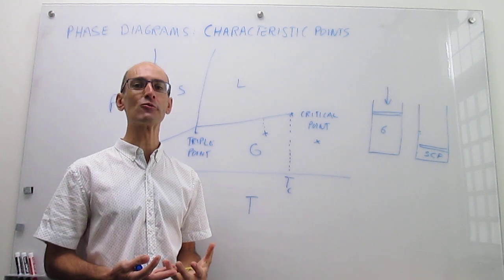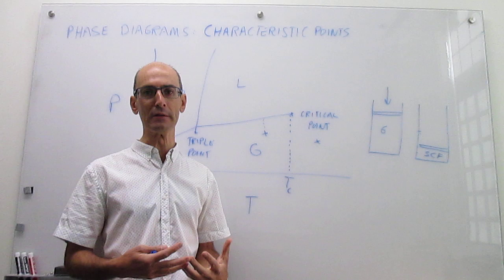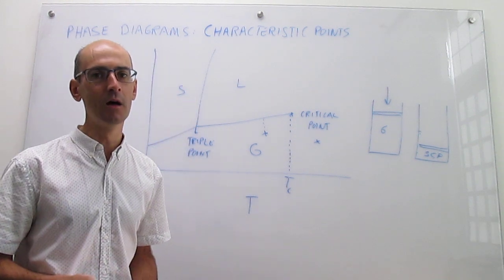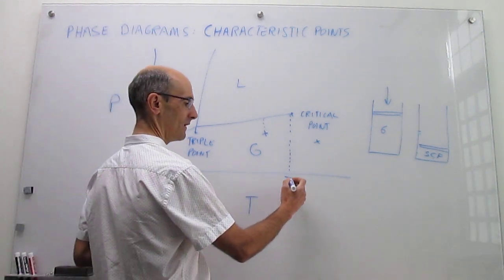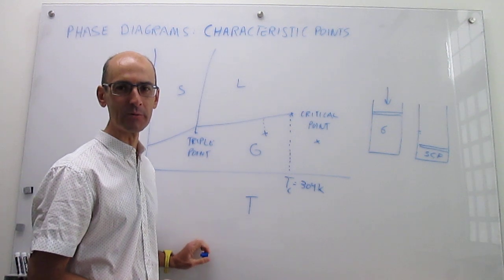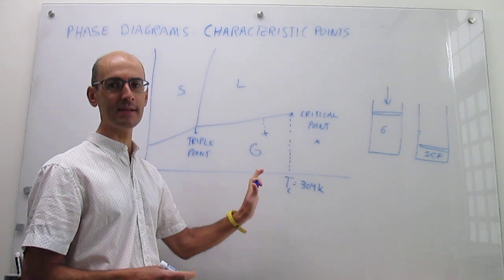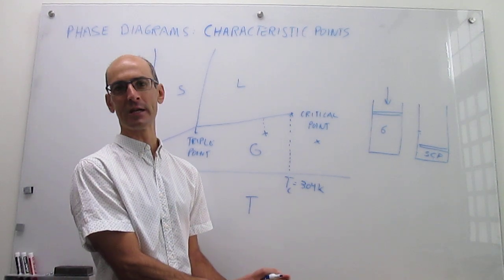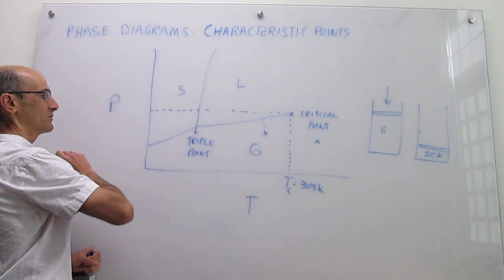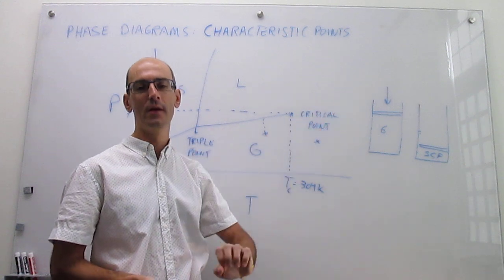Supercritical fluids are extremely good solvents, and there's a whole industry trying to do chemistry using them. CO2 is perhaps the most used supercritical fluid in the world because it has a very amenable critical point. For CO2, the critical temperature is only 304 Kelvin, which is about 88 Fahrenheit. You can actually get supercritical CO2 on a reasonably hot summer day. The critical pressure for CO2 is also very amenable at about 73 atmospheres, making it easy to reach the supercritical region.